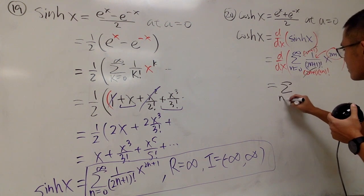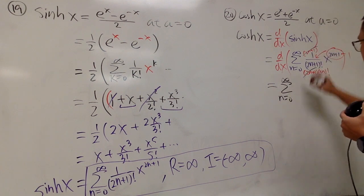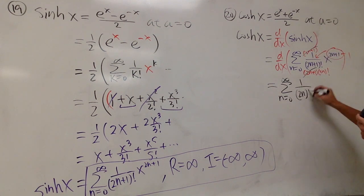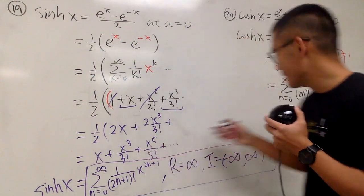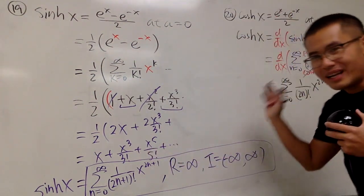you end up with the sum, n goes from 0 to infinity, positive 1 over 2n factorial, and then this is just x to the 2n. Yes, this is the cosh, and you don't alternate at all.